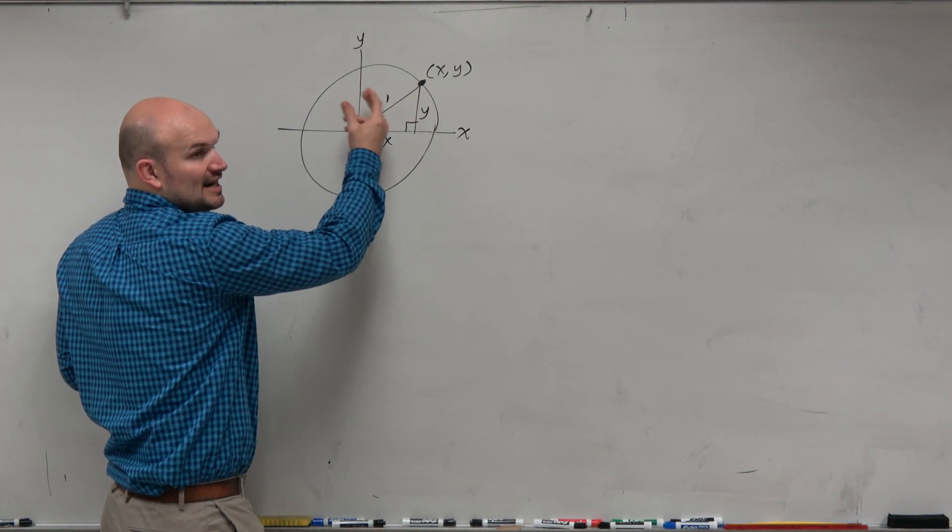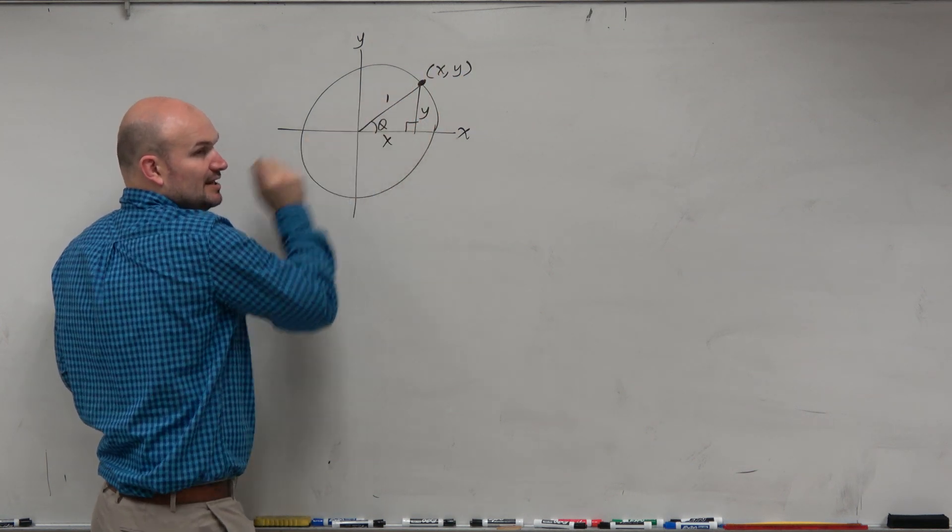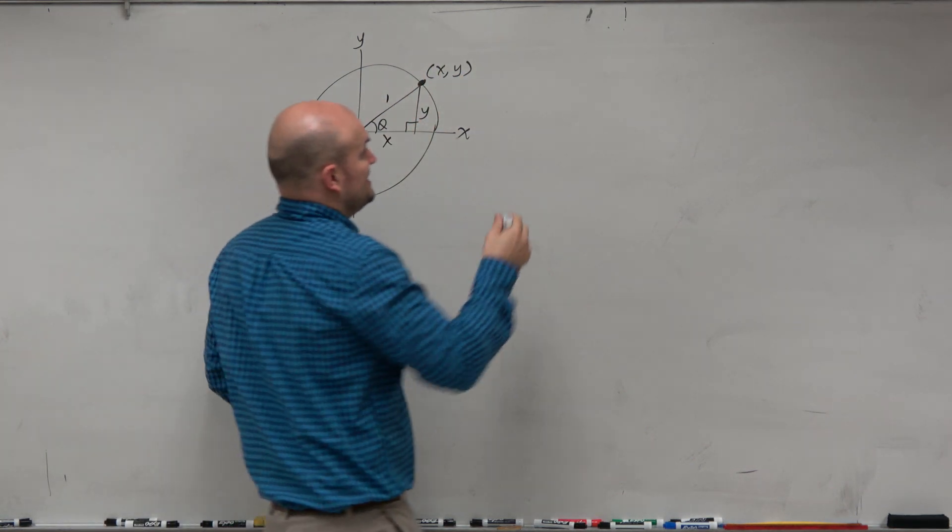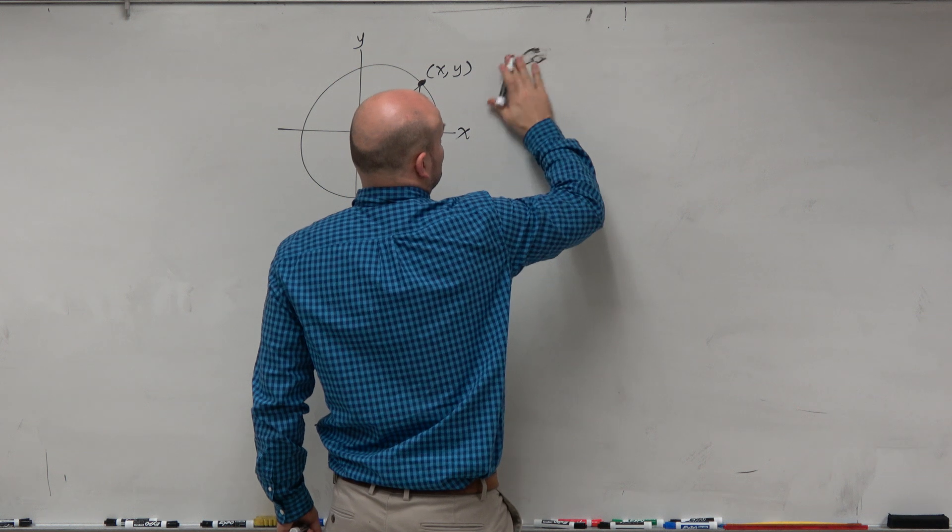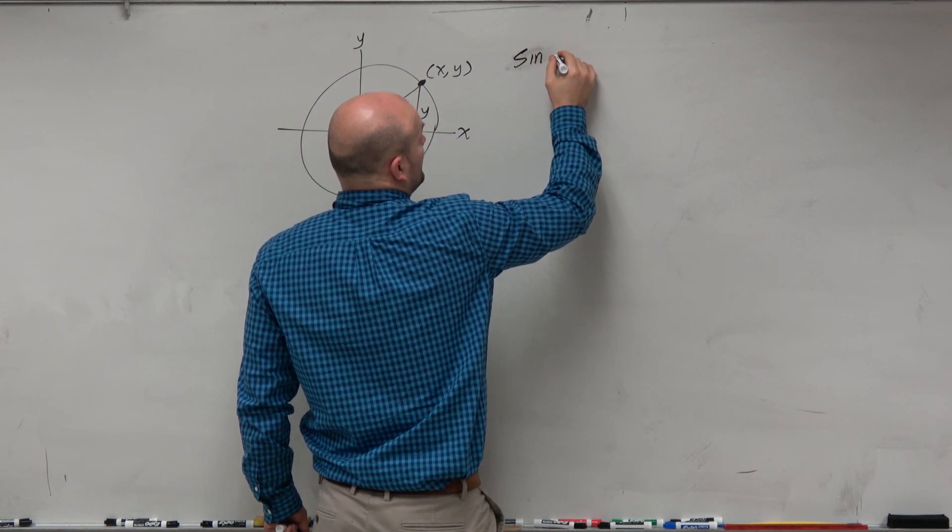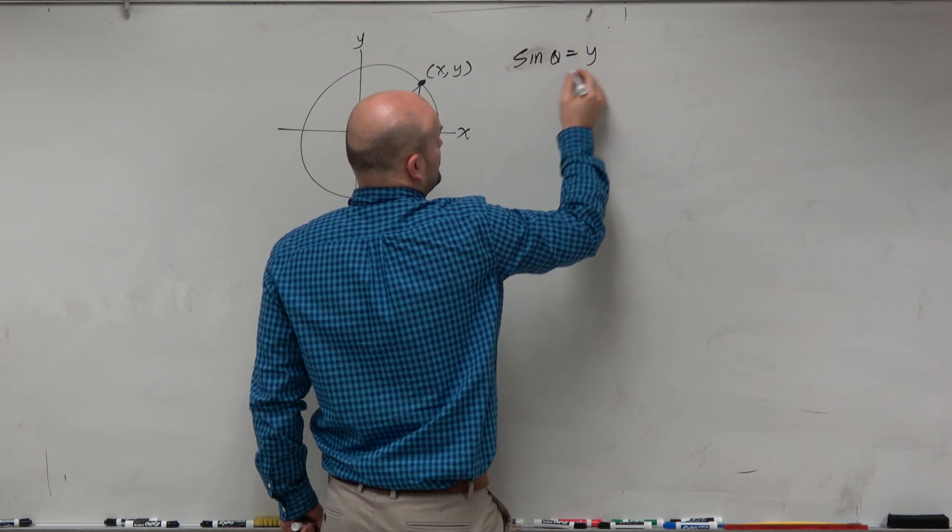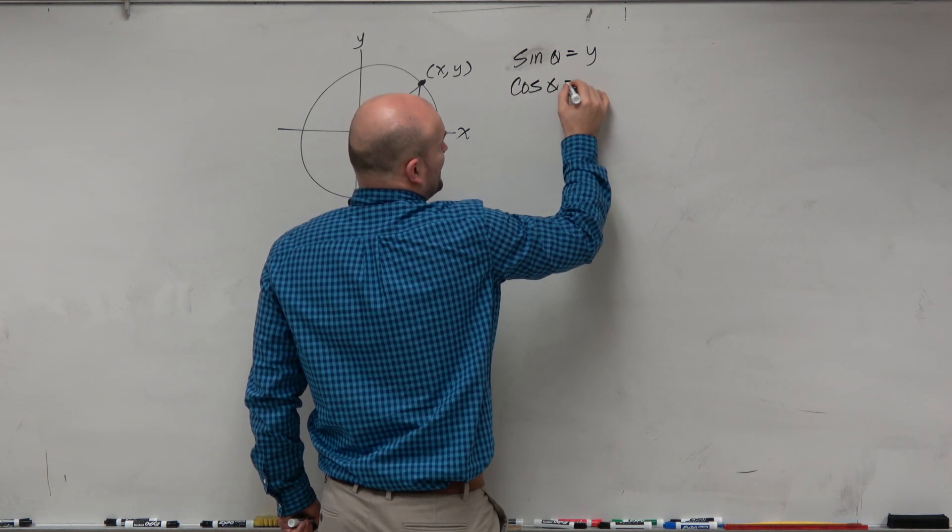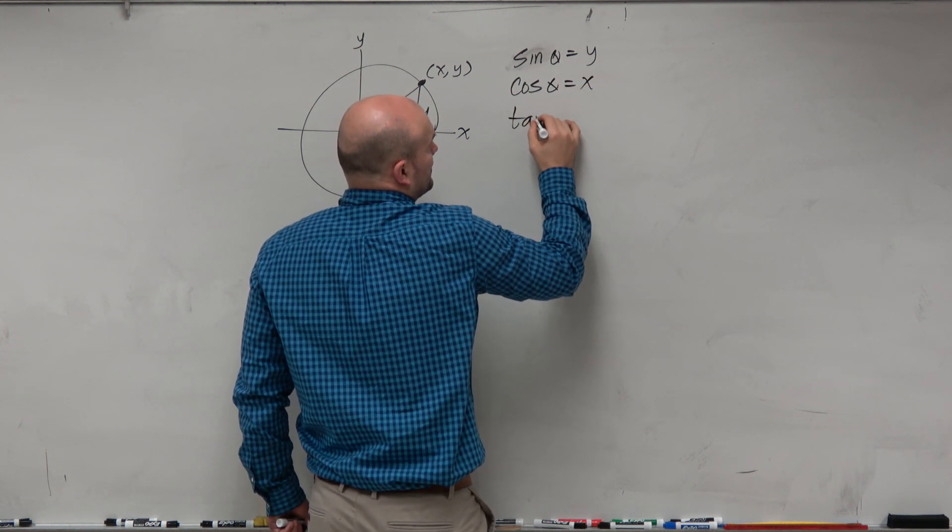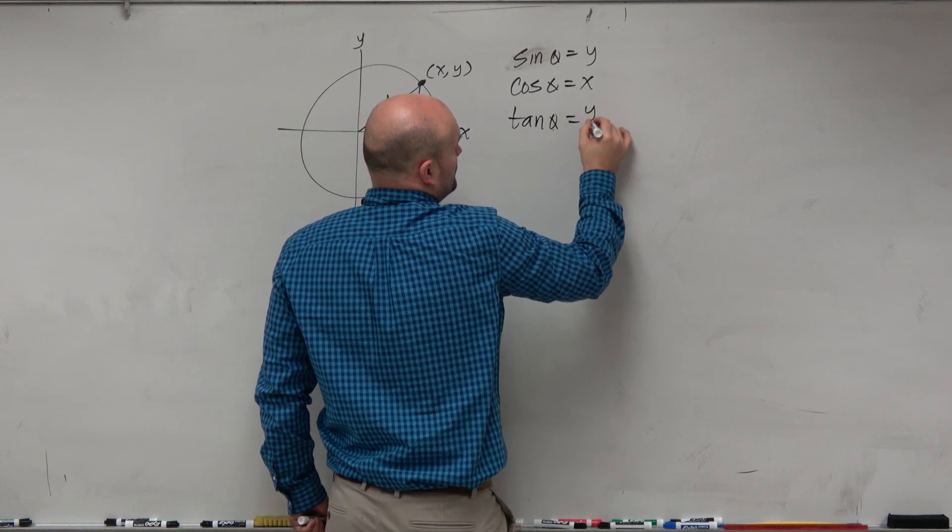And again, that still is a 30-60-90 triangle that just got compressed into our unit circle. So what we did is we came up with these shortcuts. Sine of theta is equal to the y-coordinate, cosine of theta is equal to the x-coordinate, and tangent of theta is equal to the y over the x.